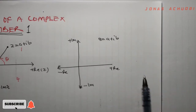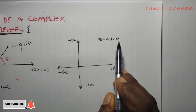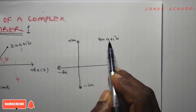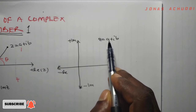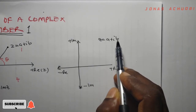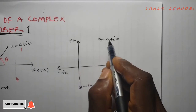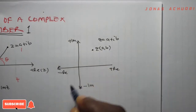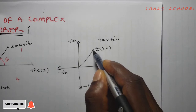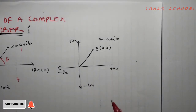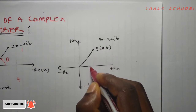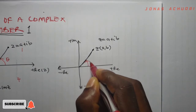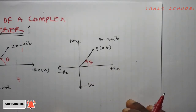If we have a complex number z equal to a plus ib, this complex number falls in the first quadrant. The real part a is positive and the imaginary part b is also positive, so the complex number is located in the first quadrant at point (a, b). The argument of the complex number is the angle theta that it makes with the positive real axis.